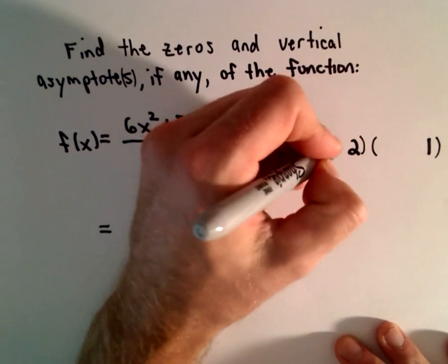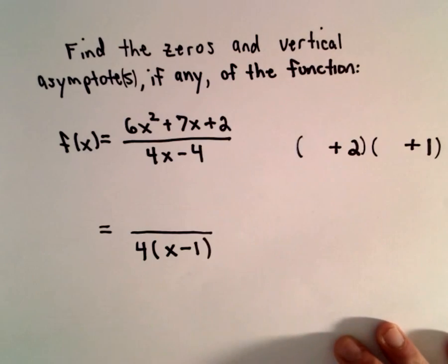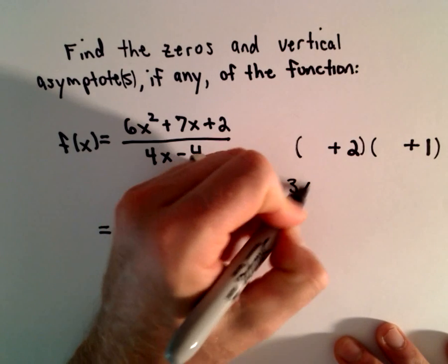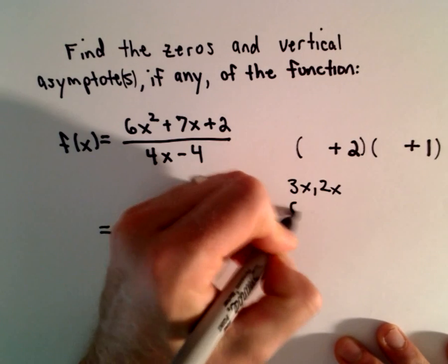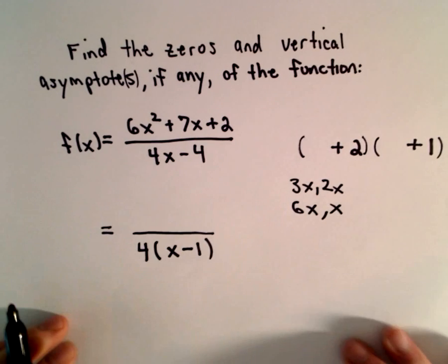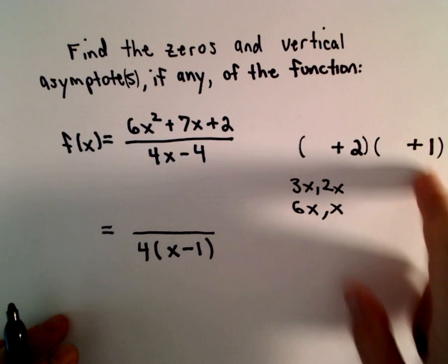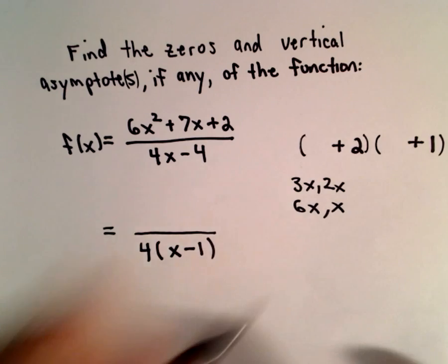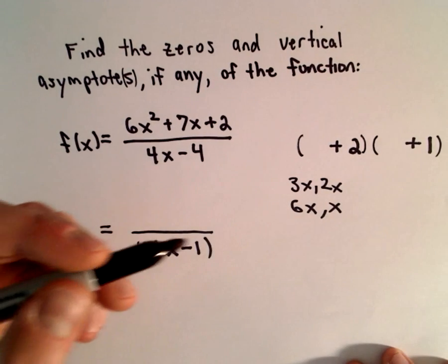Since the sign in the middle is positive, that's going to make both of them positive. But now I've got a choice. To get 6x², for example, I could use 3x and 2x, or I could use 6x and x. Then we have to distribute and things can be a little tricky here.